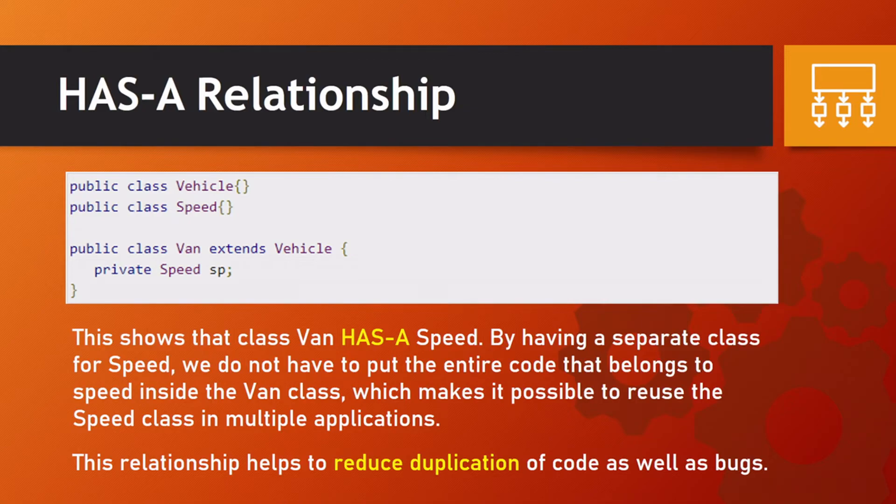So when we put this into code, we have a simple code with class Vehicle, class Speed, and then class Van is the main method and it extends the Vehicle. So Van IS-A Vehicle, and Van HAS-A Speed. This shows that class Van HAS-A Speed.